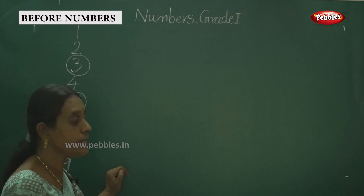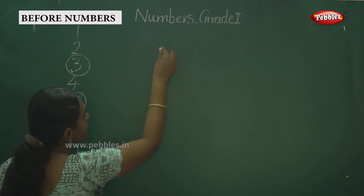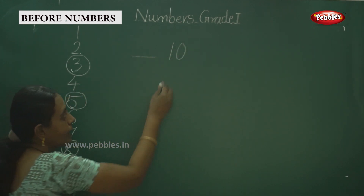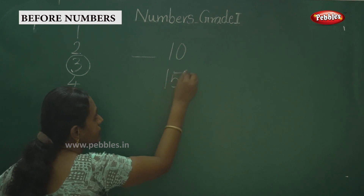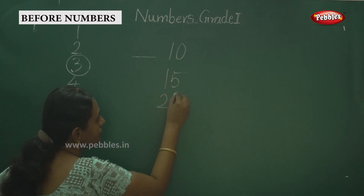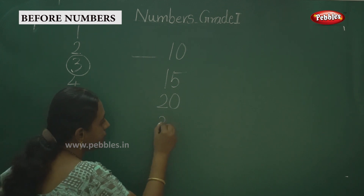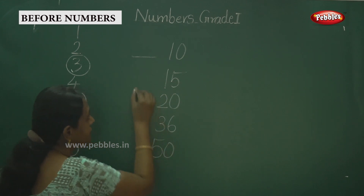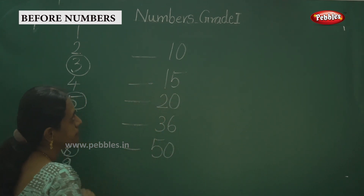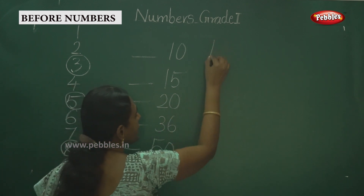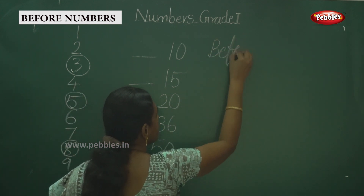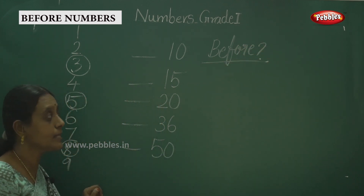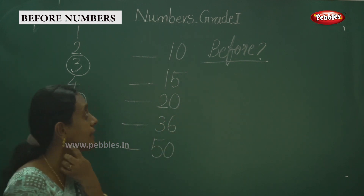So we have been discussing. We have to discuss some more numbers here. That is 10, and 15, and 20, and 36, and 50. We have to write the number — what is before? We are discussing what is before.